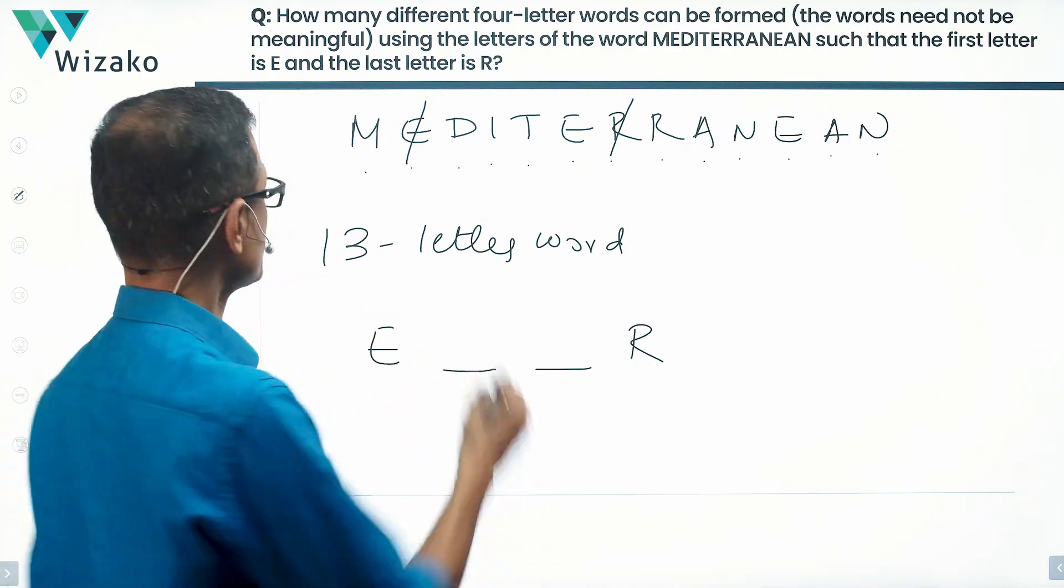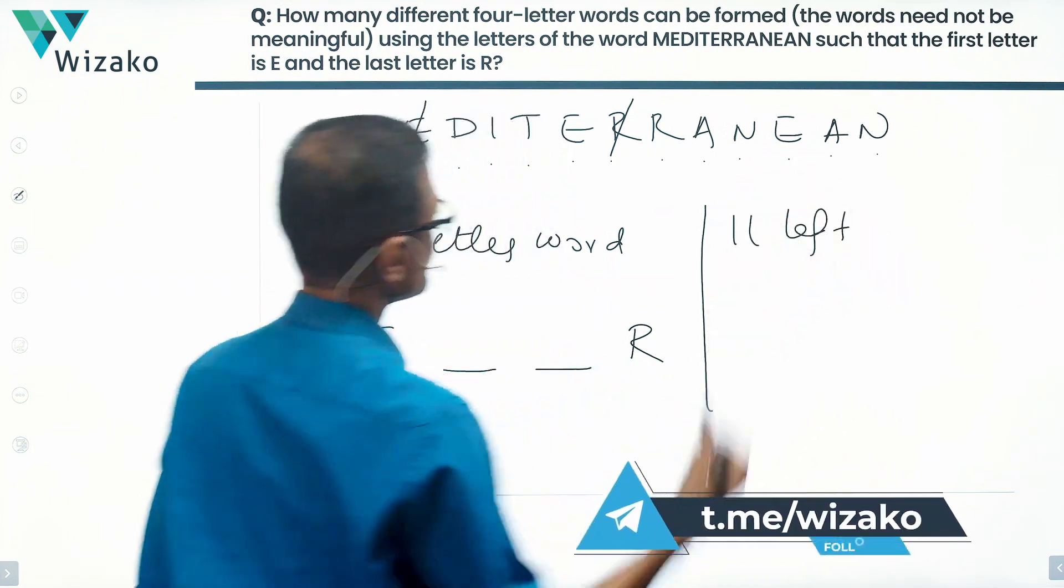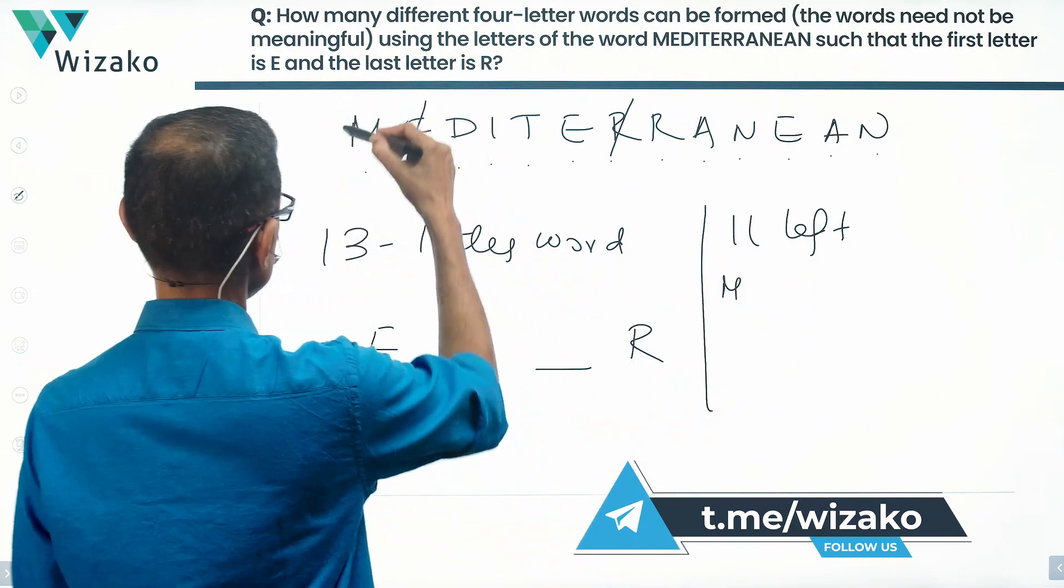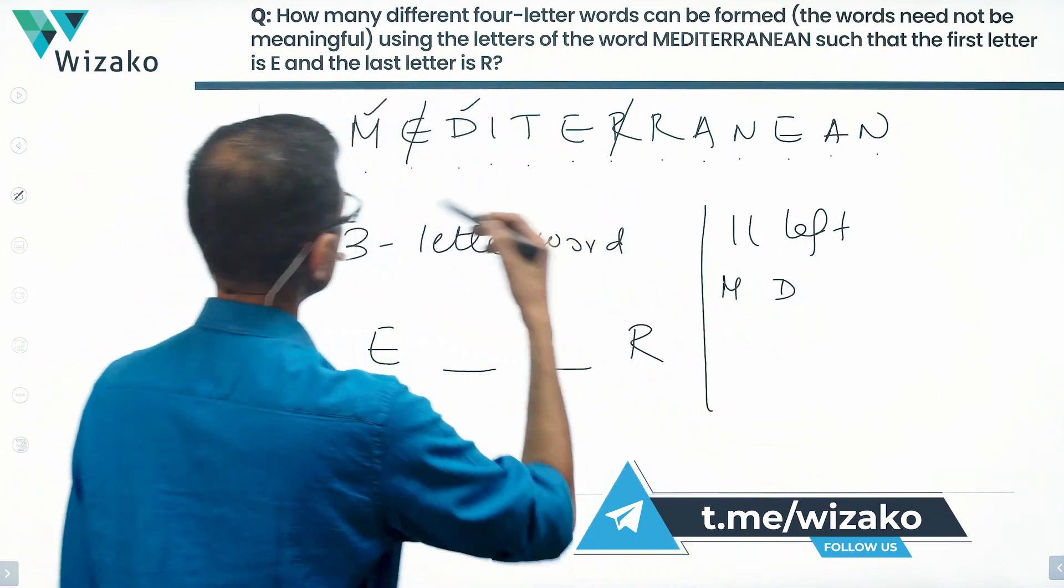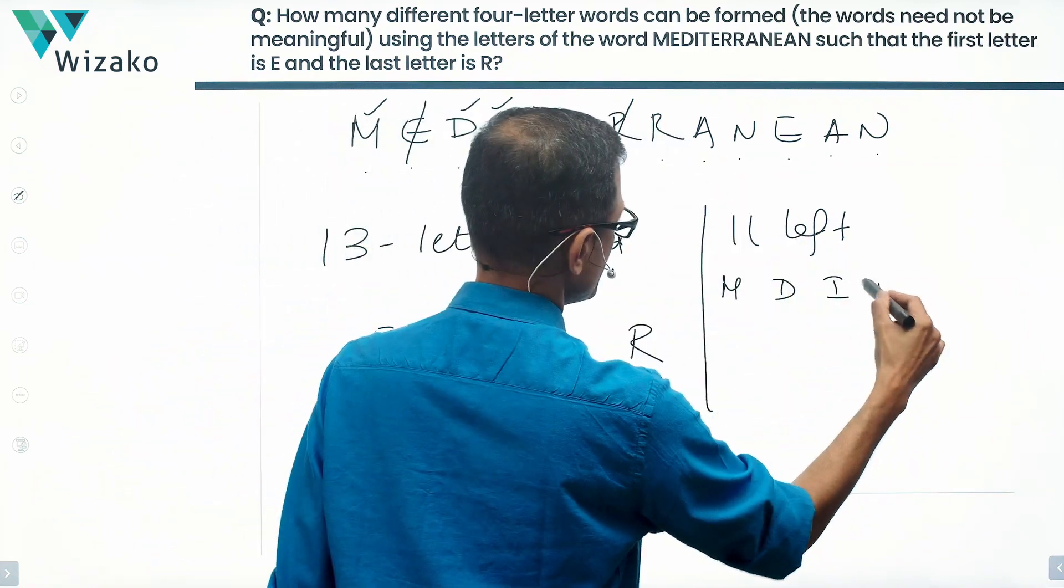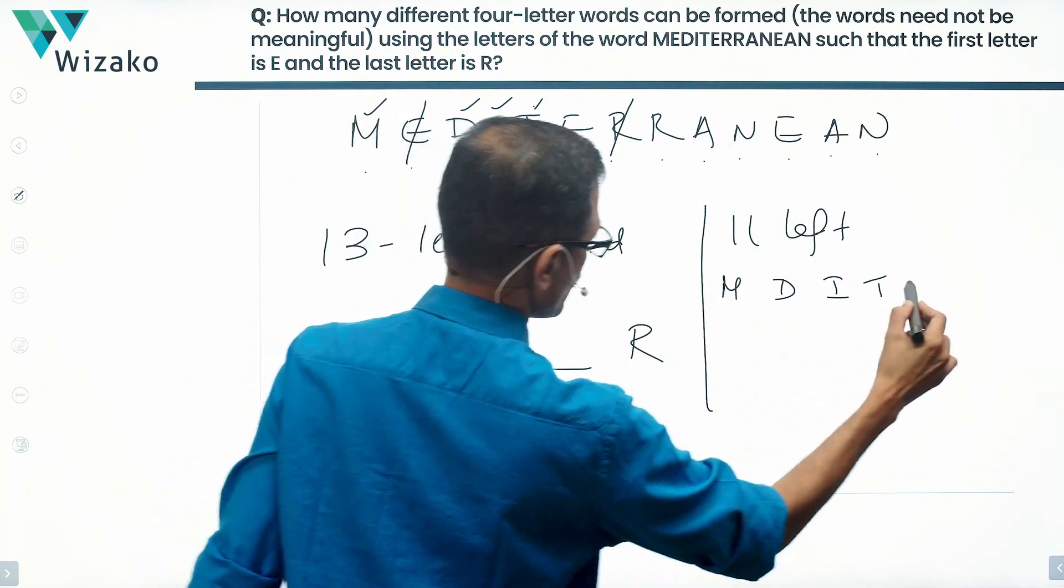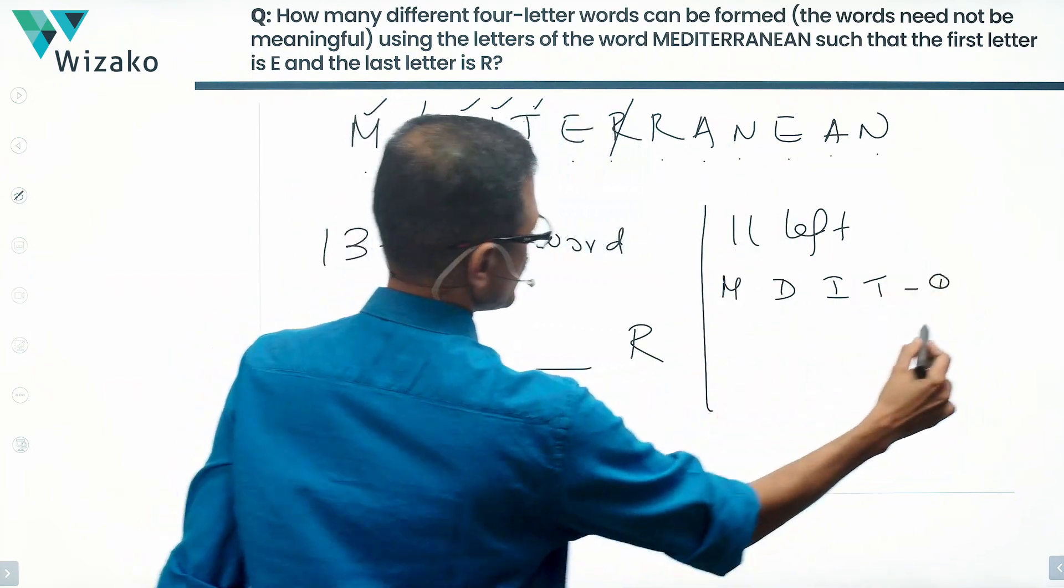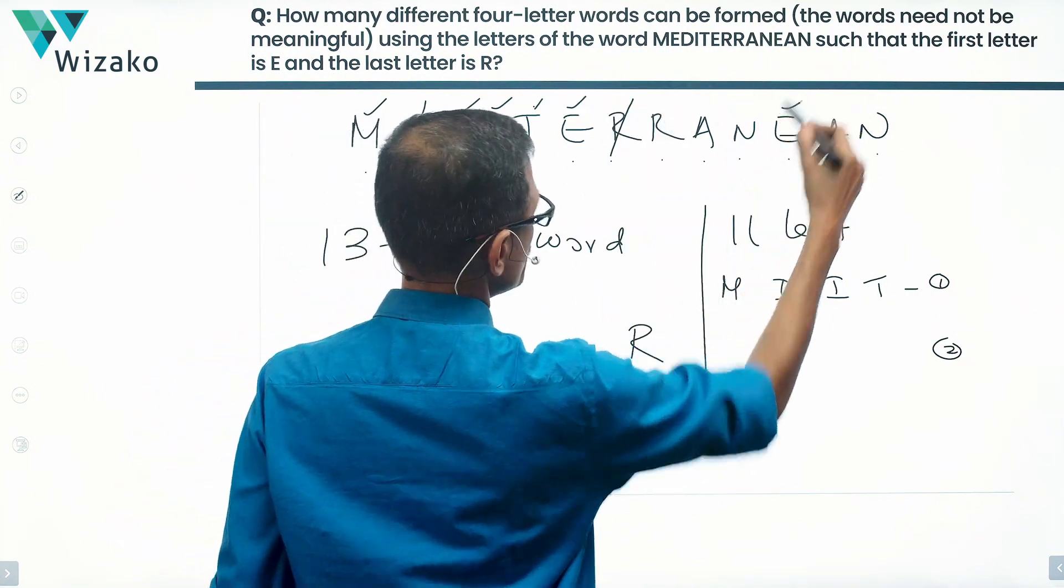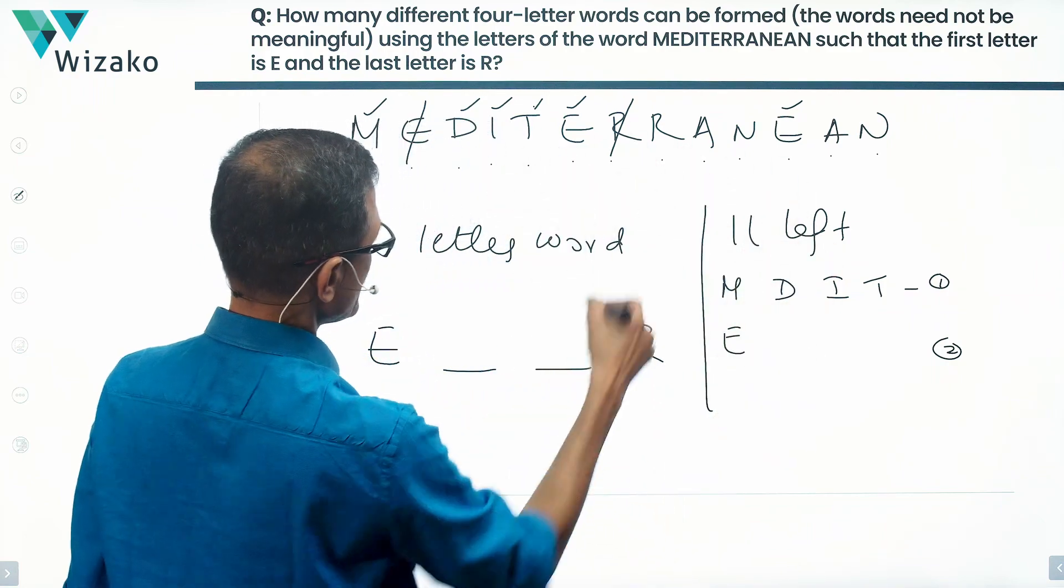Let's check out the composition of these 11 remaining letters. We have 1M, 1D, 1I, 1T - these are all a count of one. How many E's are left? I have two E's. Counts of two, essentially - I have two E's.